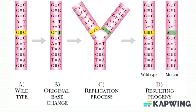When the DNA molecule replicates, complementary bases will be incorporated into the new strands opposite the bases making up the mismatch. The result is one wild-type daughter molecule and one mutant DNA molecule.